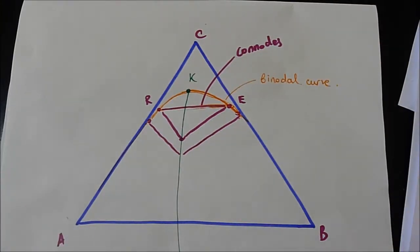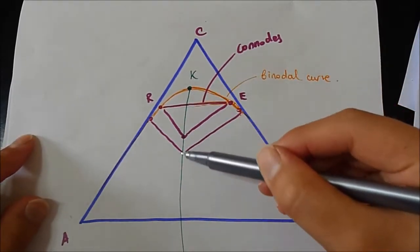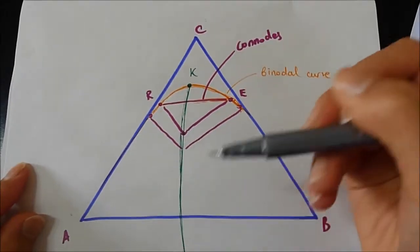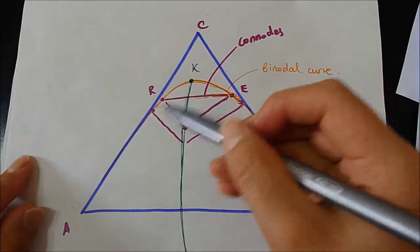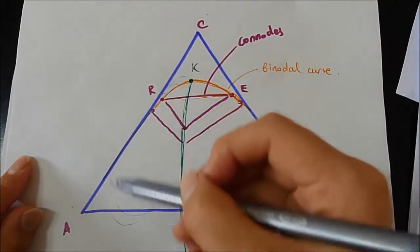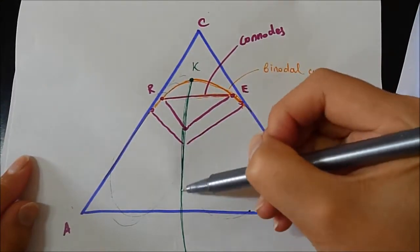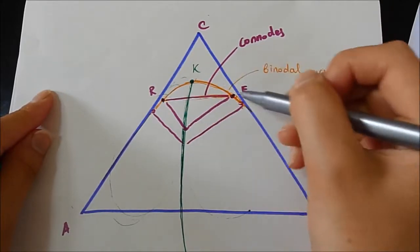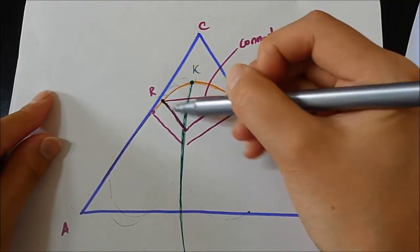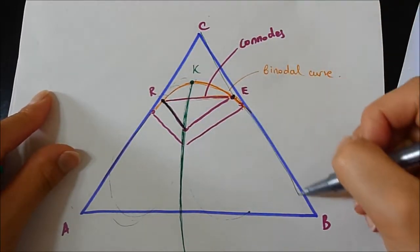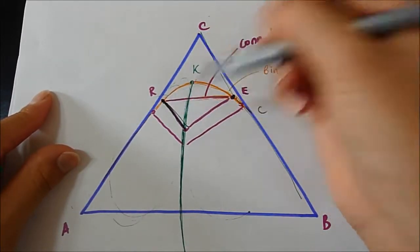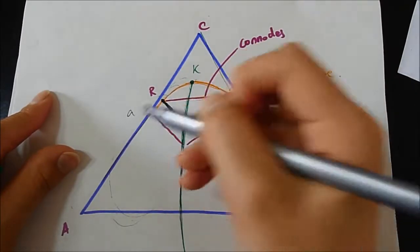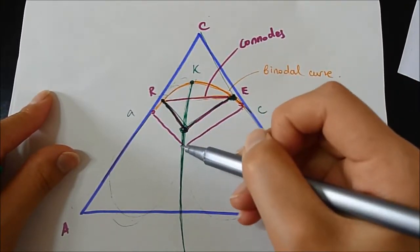By using the conode information, you can draw this curve over here. This curve splits the ternary diagram, splits the raffinate and extract phase. All of these points on this side will be the raffinate phase, and all these points will be the extract phase. How do we find this curve? We use the conode points, R and E points, and then from the R, we draw a parallel line to the C side. And from the E point, I draw a parallel line to the A side. That's how we find all these points.